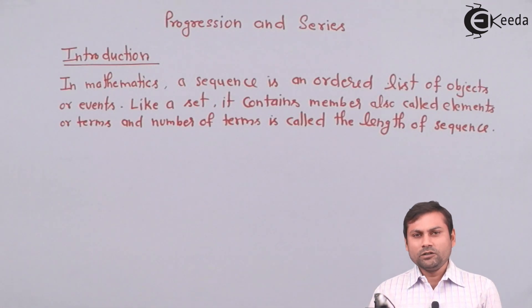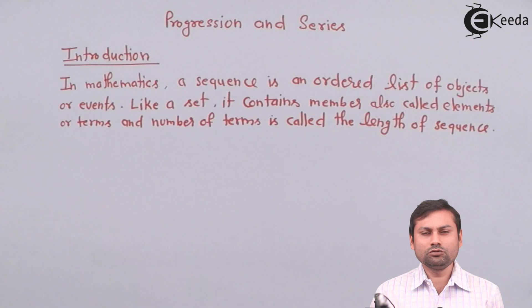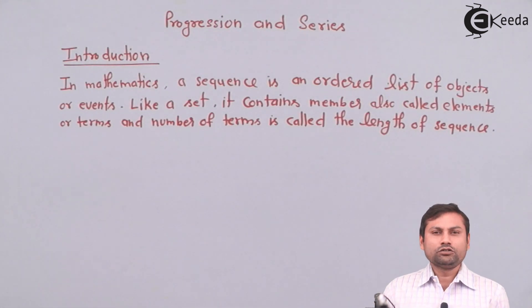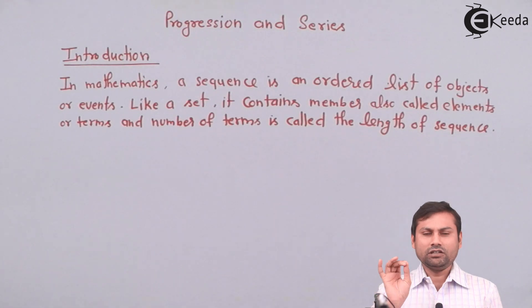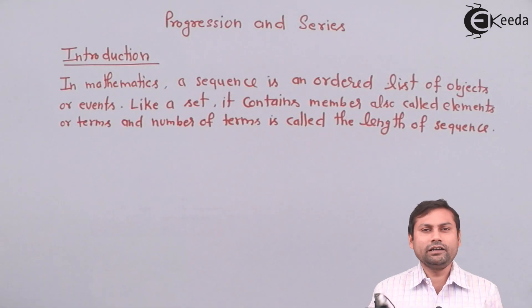So what is the sequence? Let's describe the sequence in terms of mathematical definition. First I will give you a formal definition, then I will give you a mathematical definition. The formal definition is: in mathematics, a sequence is an ordered list.